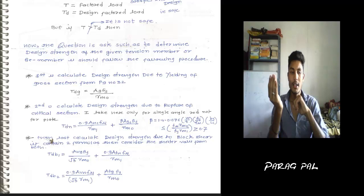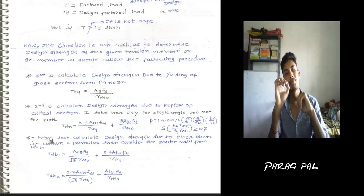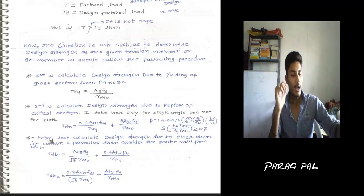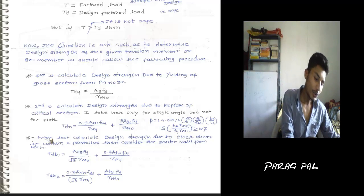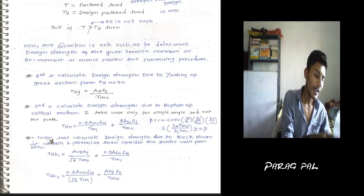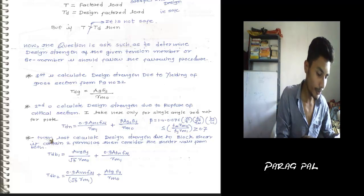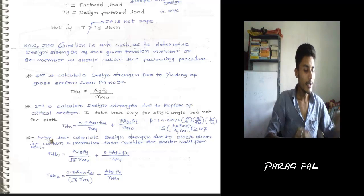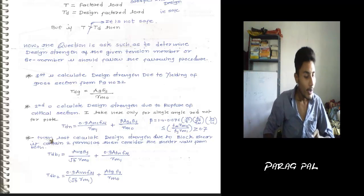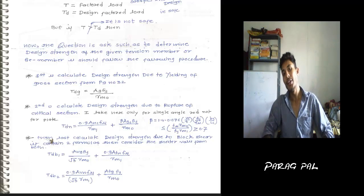First, if you are provided with the area, you calculate the design strength due to yielding of gross section. This formula is given in the IS code page number 32. TDG equals AG times FY upon gamma M0. Also, the value of gamma M0 is given - no requirement to remember all these values. On page number 30 you get all the values of gamma M0, gamma M1, gamma MF, gamma MD.